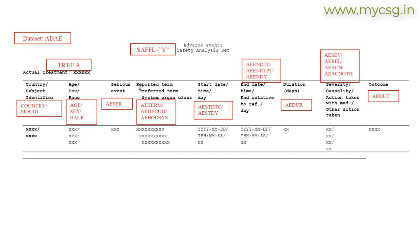For the column presenting reported term, preferred term, and system organ class, we are asked to use AETERM, AEDECODE, and AEBODSYS variables respectively. For start date and time and the study day, we are asked to use information from AESTDTC and AESTDY. For the end date time and end relative to reference period or day, we are asked to use values from AENDTC, AENRTPT, and AENDY.